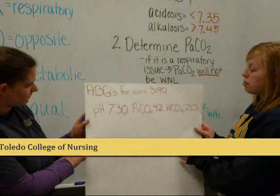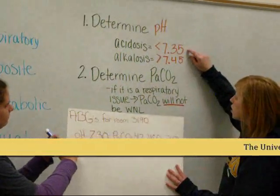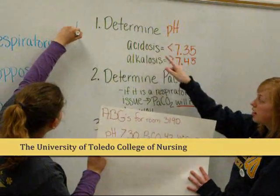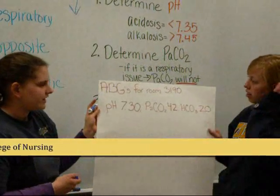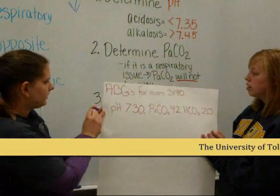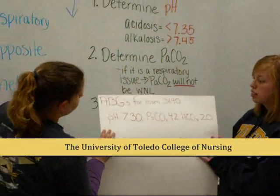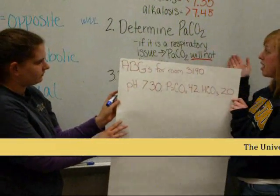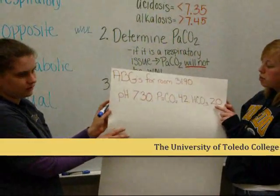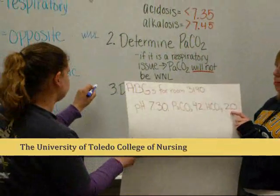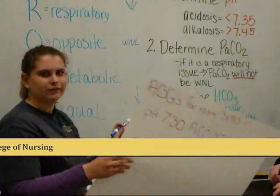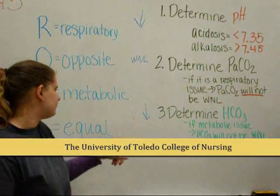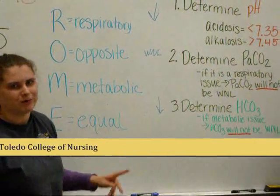In this example, the patient's pH is 7.30. You can see that's less than 7.35, which means it's acidotic. The PaCO2 is 42, which is within the normal range, so it's not a respiratory issue. Then looking at bicarb — normal is 22 to 26 — and it's low, so this is a metabolic issue. With ROME, you can see both arrows point down, meaning they're equal, which confirms it's a metabolic issue.